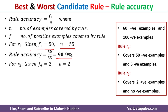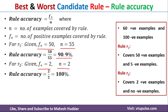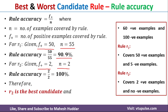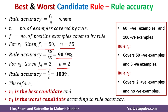Similarly, we will calculate the rule accuracy for the second rule. In this second rule, we have two positive examples, meaning f+ is equal to 2, and zero negative examples, so we have totally two examples. The rule accuracy is 2 divided by 2, which is equivalent to 100%. Rule number two is the best candidate compared to rule number one.